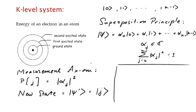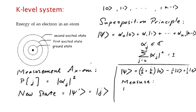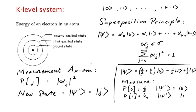So we can do a quick example. If k was 3, so we have a 3-state system, we might have our state as |0⟩ with amplitude (1/2 + i/2), |1⟩ with amplitude −1/2, and |2⟩ with amplitude i/2. Now if we measure: the probability of seeing 0 is 1/2, and the new state is |0⟩; the probability of seeing 1 is 1/4, and the new state is |1⟩; and the probability of seeing 2 is 1/4, and the new state is |2⟩.